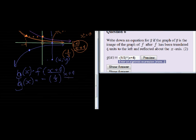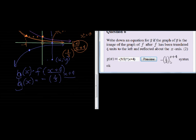That's what it looks like. Preview it—there we go, that's exactly what we want: negative a third to the power X plus 4. Well done.